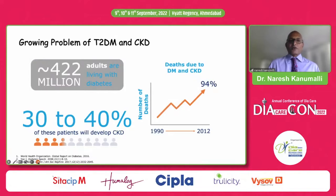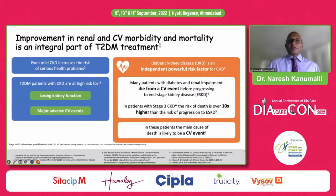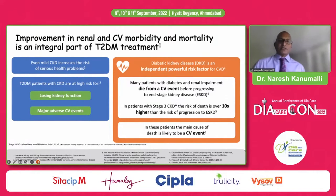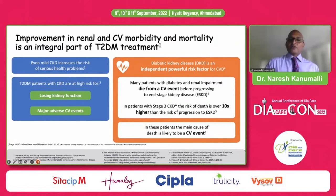There are 422 million people in the world living with diabetes, and 30 to 40% of those will develop chronic kidney disease. Improvement in renal and cardiovascular morbidity and mortality is an integral part of type 2 diabetes management — it's not just about glycemia. Even mild CKD increases the risk of serious health problems, and using SGLT2 inhibitors early on can improve cardiovascular outcomes, even when related to chronic kidney disease.